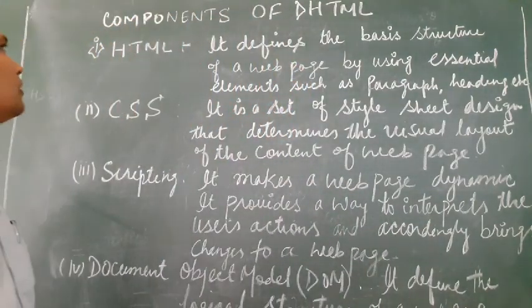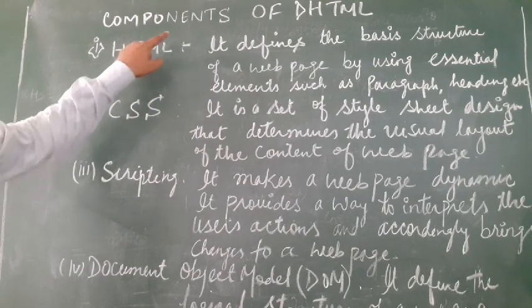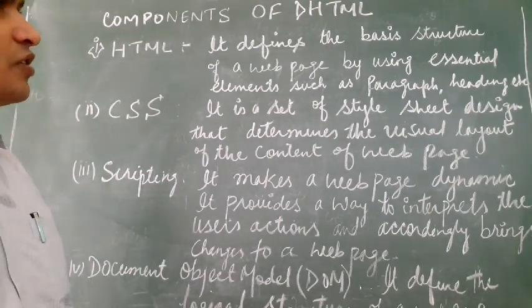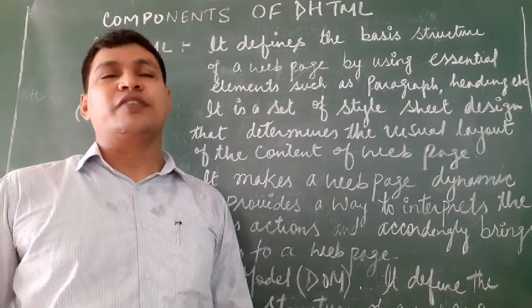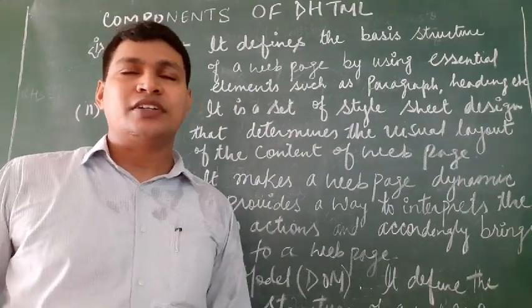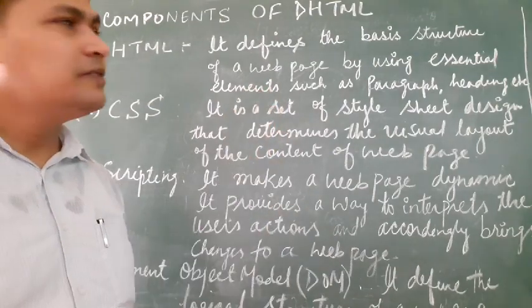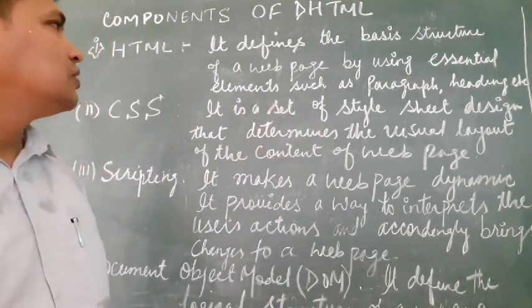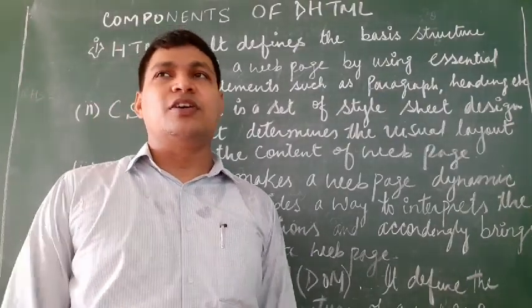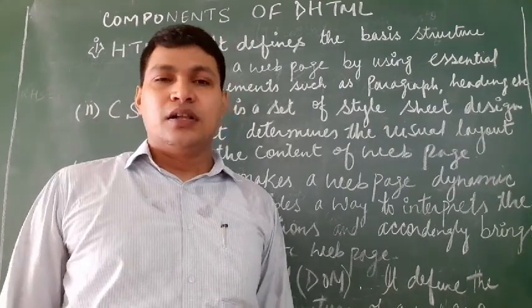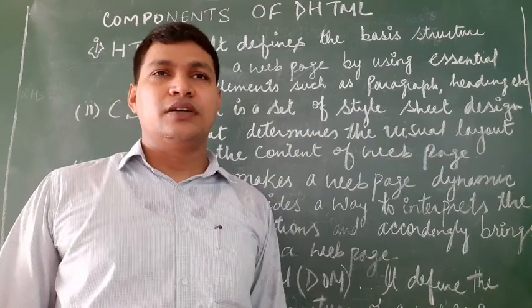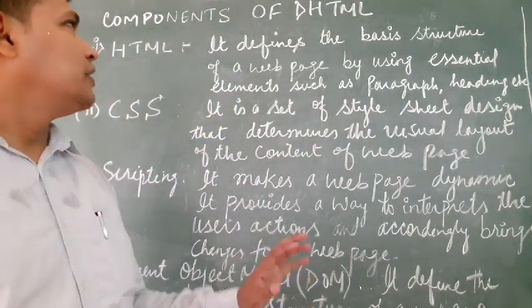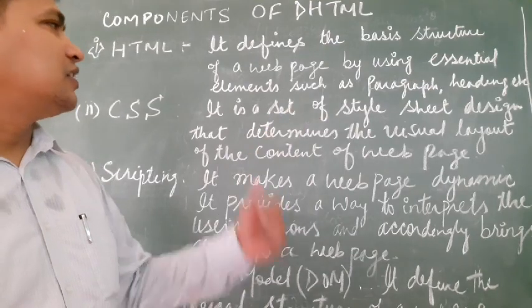Students, first of all, in the DHTML document, the first component is HTML. HTML defines the basic structure of the web page. Without using HTML, you cannot configure a DHTML document. It uses various types of attributes and tags to define the basic structure. We already know the basic tags: body tags, head tags, title tags, paragraph, and so on. All these tags are used to define the basic structure of DHTML.